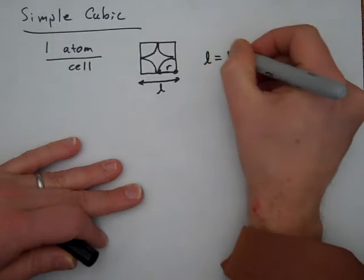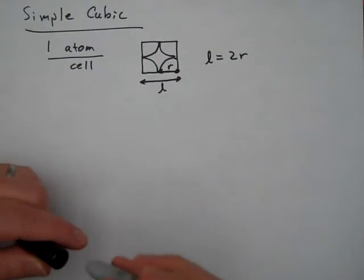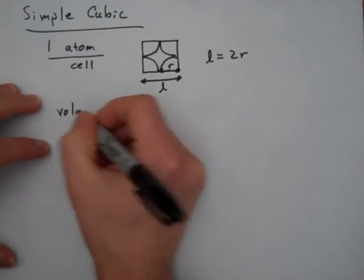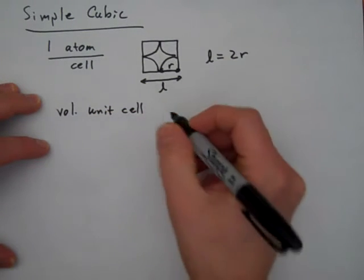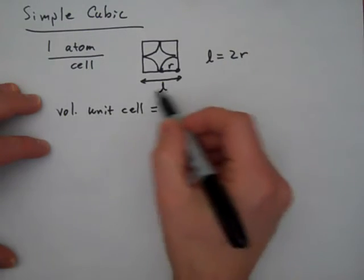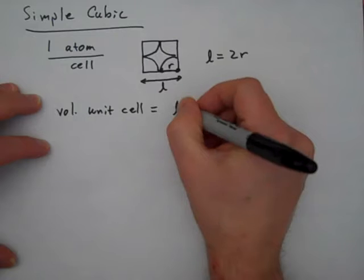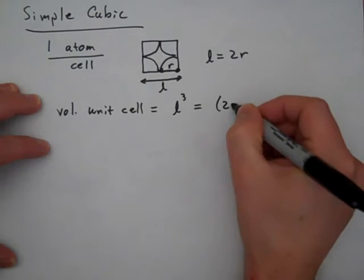So length is equal to 2r. So I can use this to figure out the packing efficiency. So first I can get the volume of the unit cell, the whole unit cell, by realizing that I've got a cube, and the volume of a cube is length times length times length, or length cubed. And I know what length is.